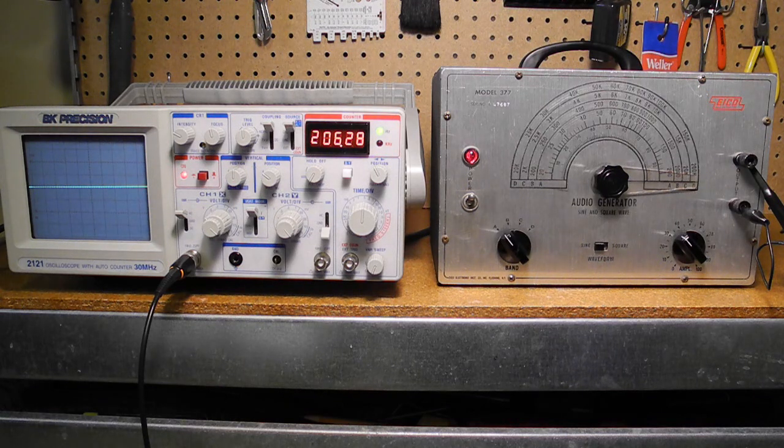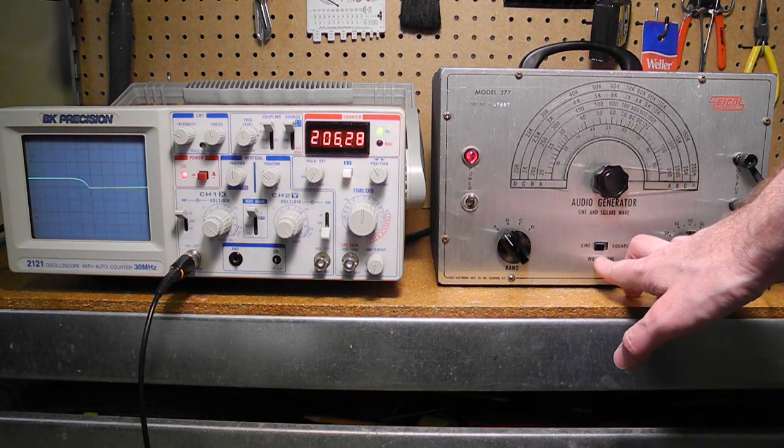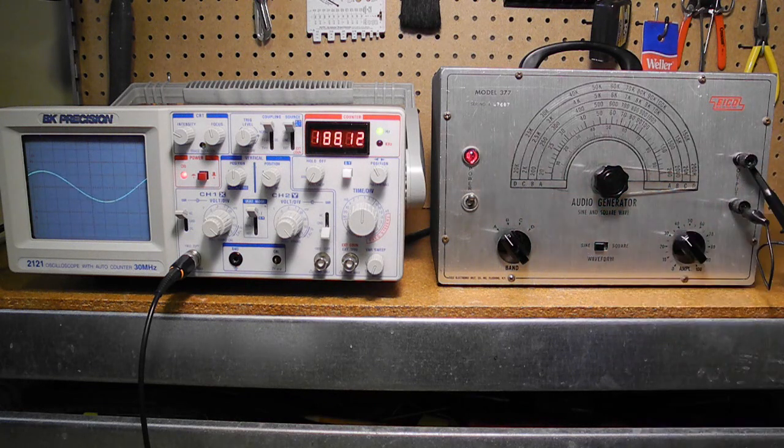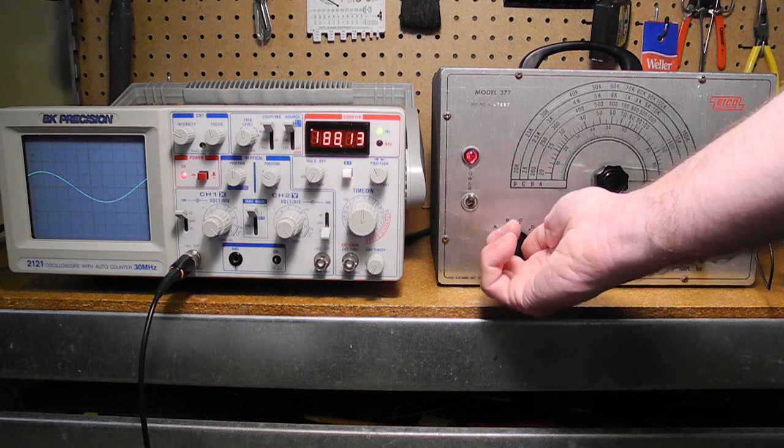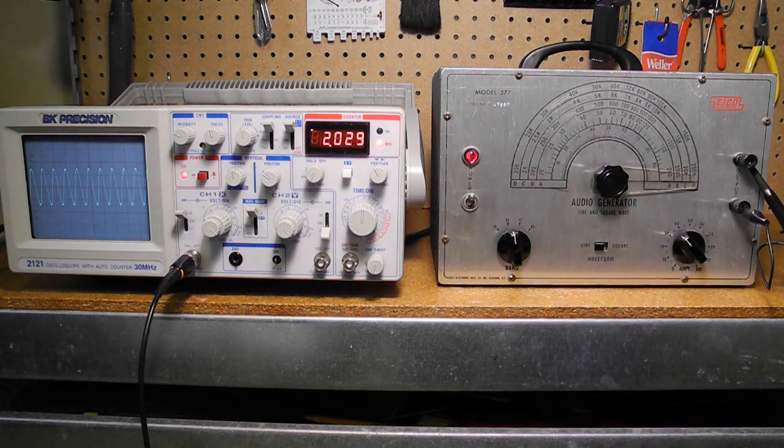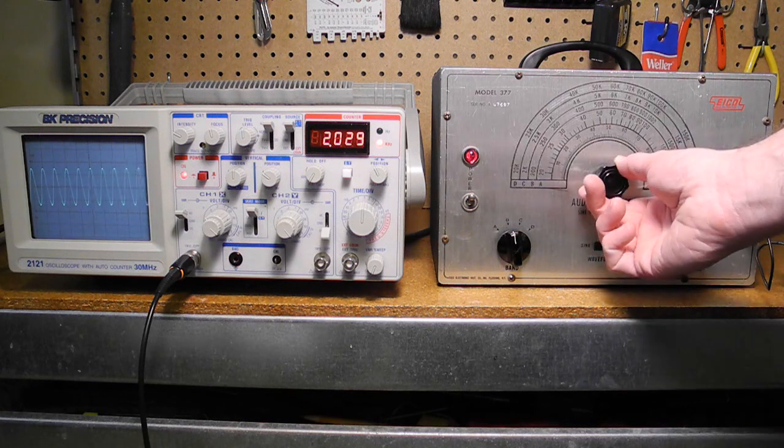To operate, select sine or square waveform using this switch. Let's start with sine. Set the range switch to one of the four ranges. Each range covers a frequency range of about 10. Let's select range B, 200 to 2,000 Hz. We set the frequency on the large dial. Let's set it to about 1,000.